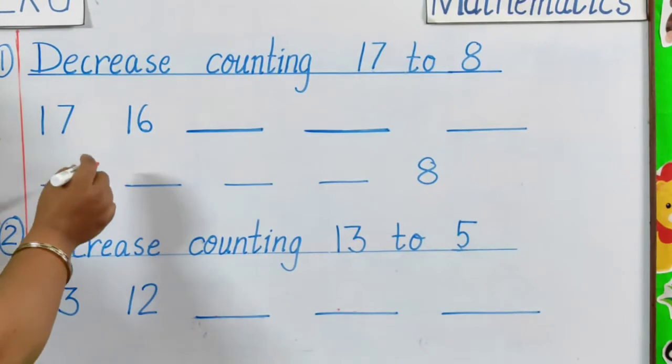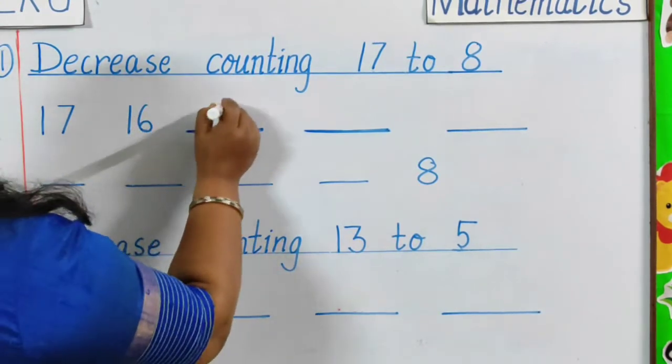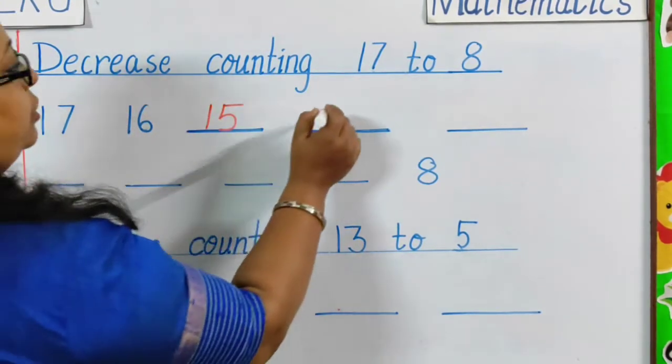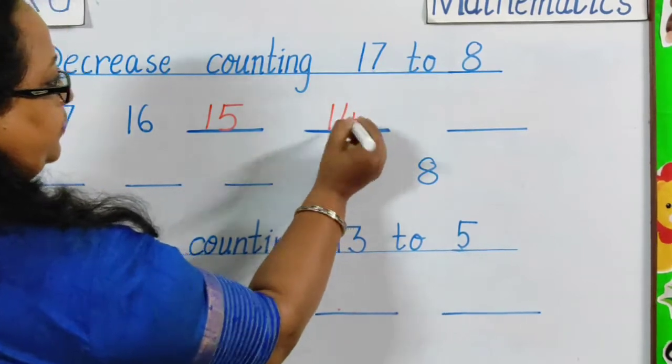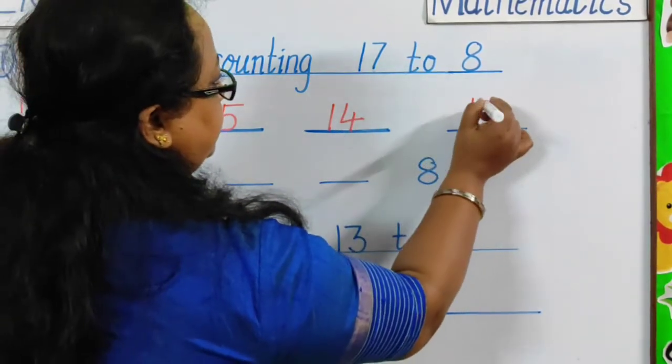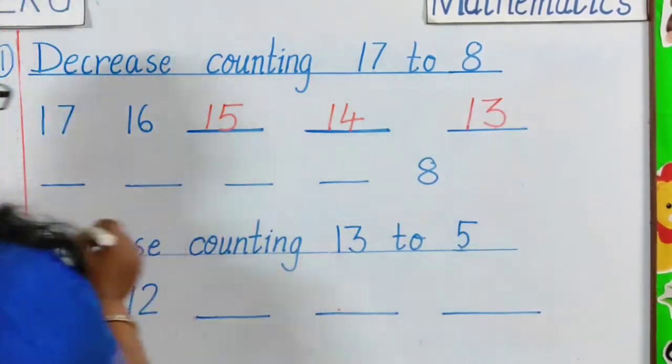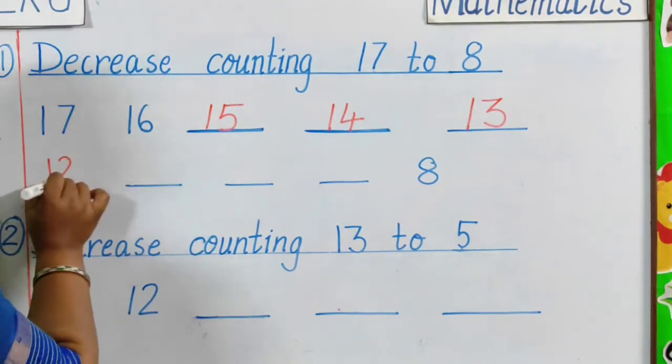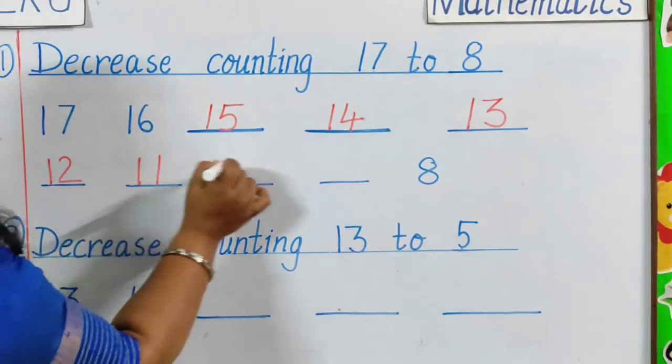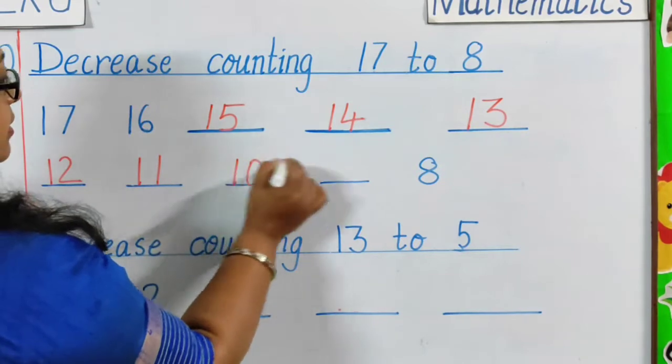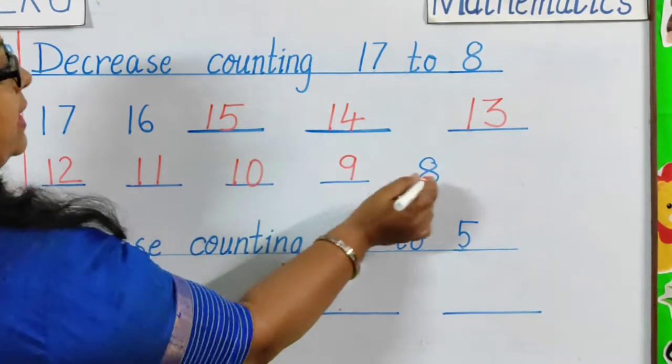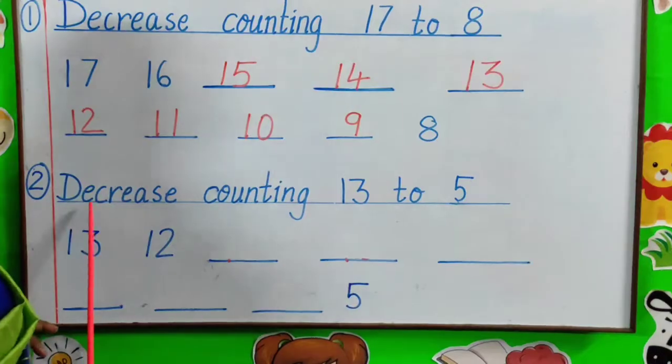17, 16, 15, then 14, 13, 12, 11, 10, 9 and 8. Next question.